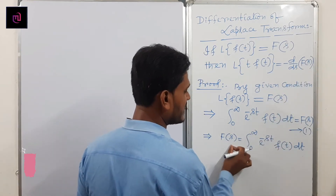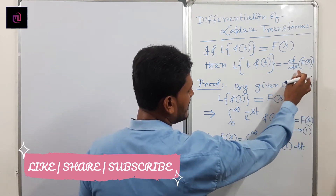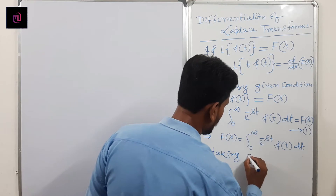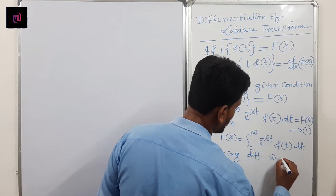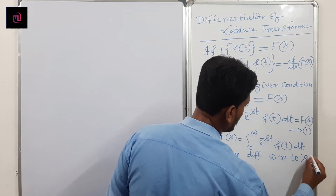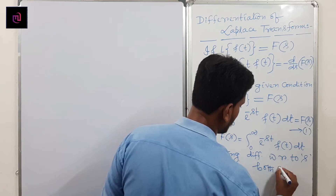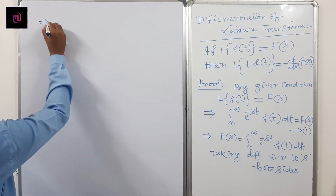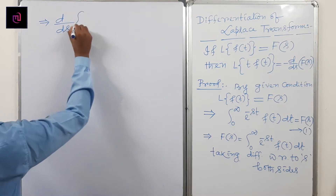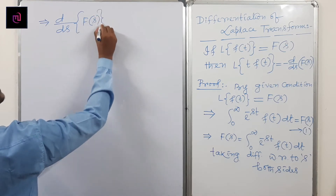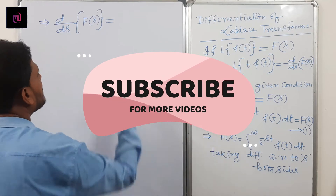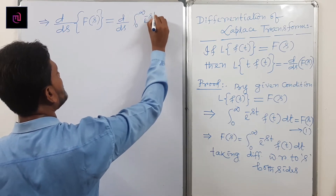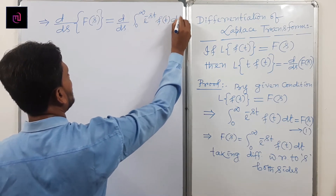Taking ordinary differentiation with respect to s on both sides. So d/ds of F(s) equals d/ds of the integral from 0 to infinity of e^(−st)·f(t) dt. Since s has no limit here, only t has limits, we can pass the differentiation directly inside the integral.